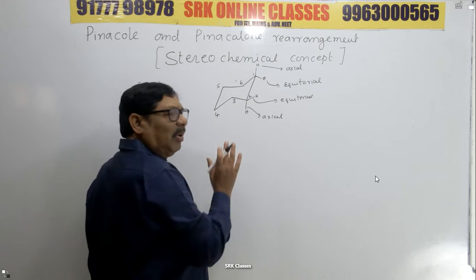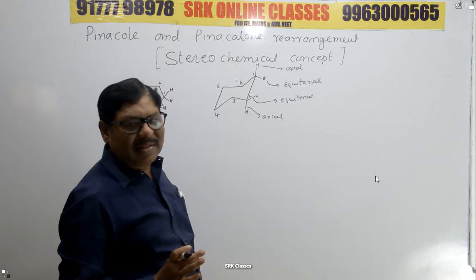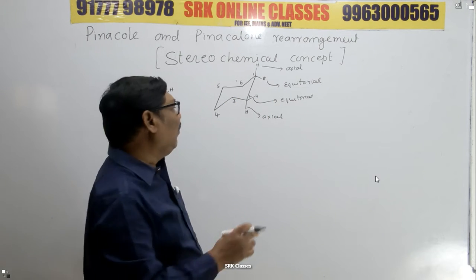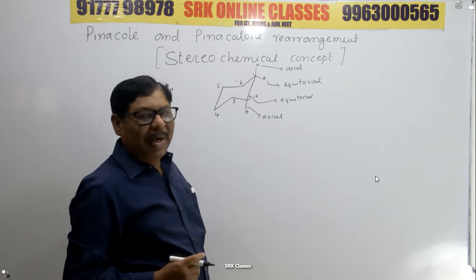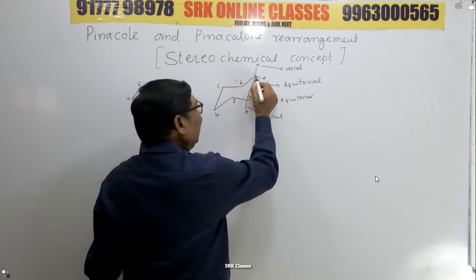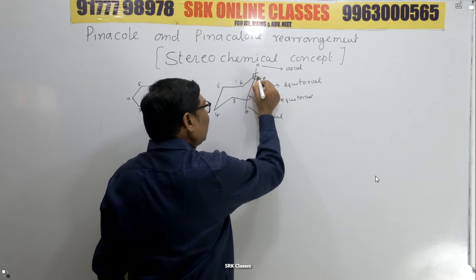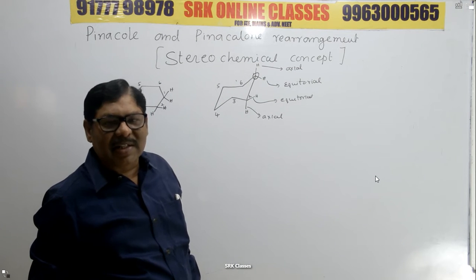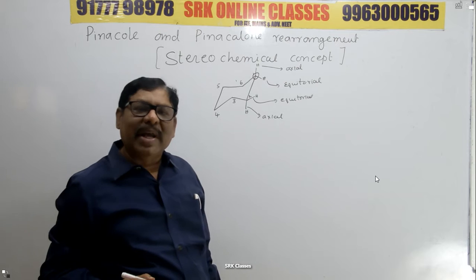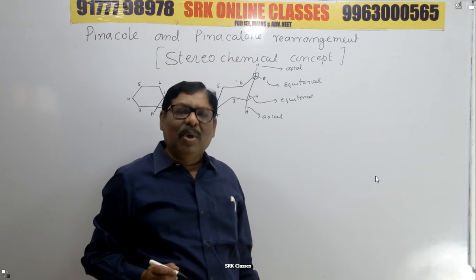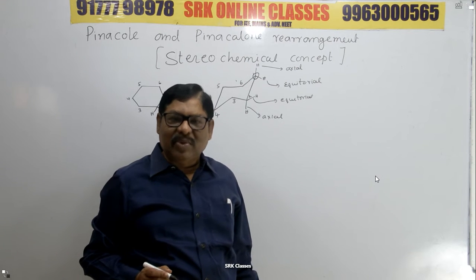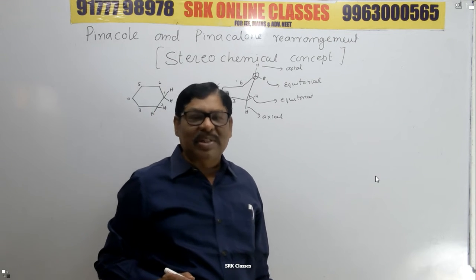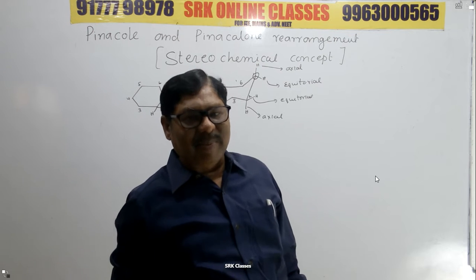The most stable conformation is the chair form. In the chair form, each carbon undergoes sp3 hybridization — it has a tetrahedral structure. The bond angle is 109 degrees 28 minutes. Now we are discussing about the stereochemical aspects.